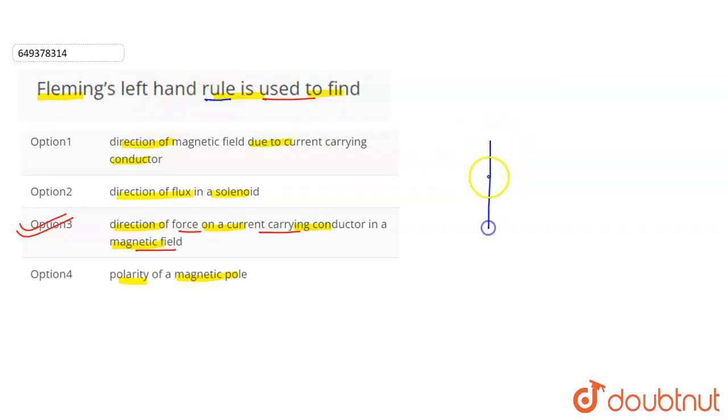If we have a current carrying conductor, we will have an external magnetic field. This magnetic field is perpendicular to this plane. So the question is if we have the magnetic force, the direction of force, how do you decide the direction?